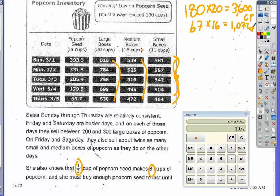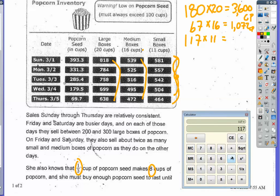For small boxes: I started with 581 and ended with 464, so I sold 117 boxes. Each box holds 11 cups, so 117 times 11 equals 1,287 cups of popcorn from small boxes over the five weekdays.